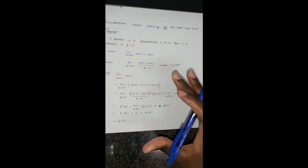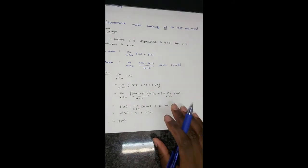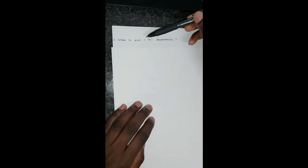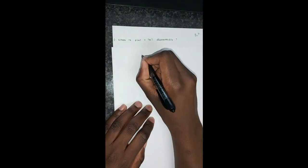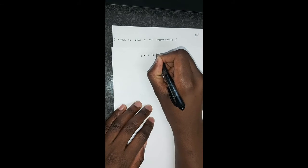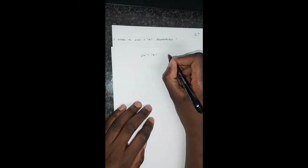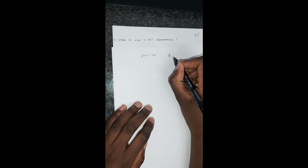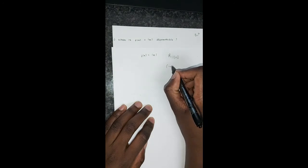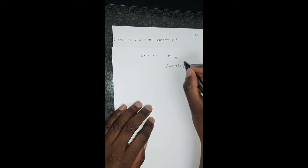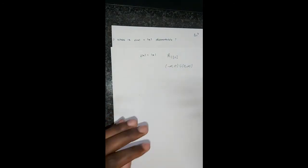Please know how to prove this — it may be asked in tests and exams. The first question: where is f(x) equals |x| differentiable? f(x) equals |x| is differentiable everywhere on the real numbers apart from x equals 0. It is differentiable on (negative infinity, 0) and then (0, infinity), because only at 0 do we have a sharp point, so it is not differentiable at x equals 0.